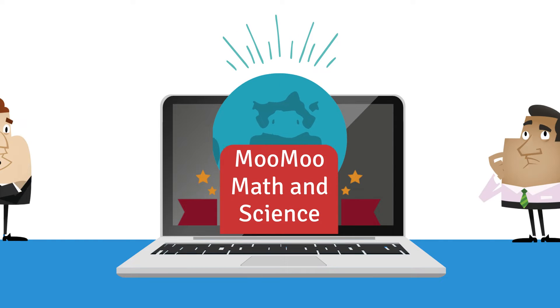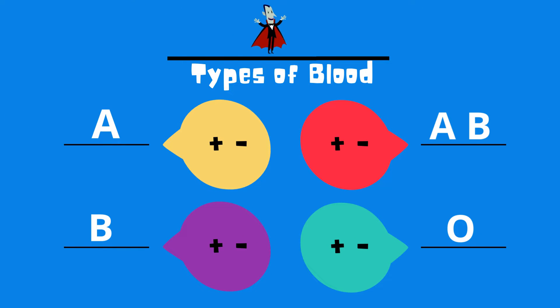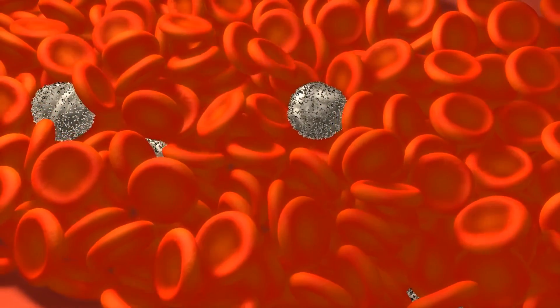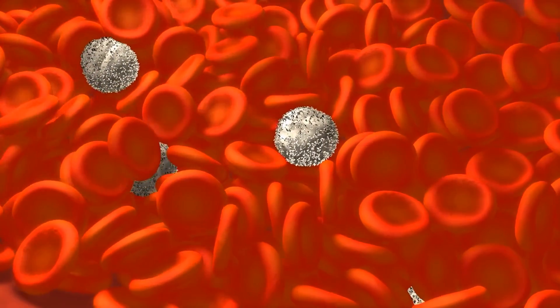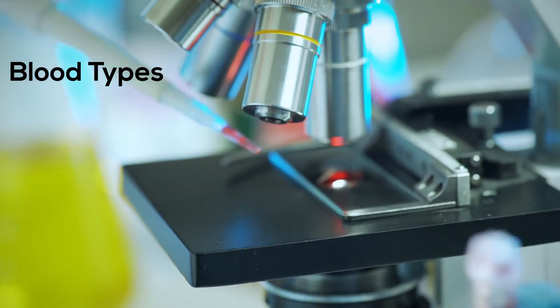Welcome to MooMooMath and Science. In this video, I'd like to talk about 8 common blood types based on the red blood cells. Your blood is the life-sustaining fluid that flows throughout your body. It can be classified or typed based on antigens found on your red blood cells.